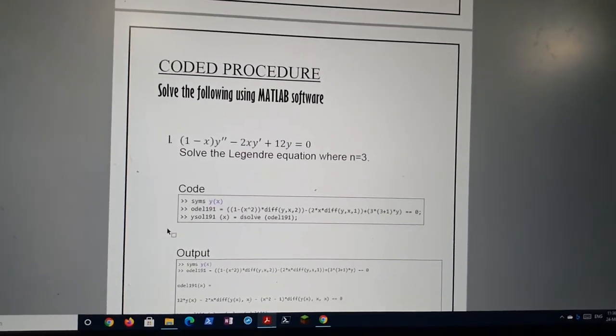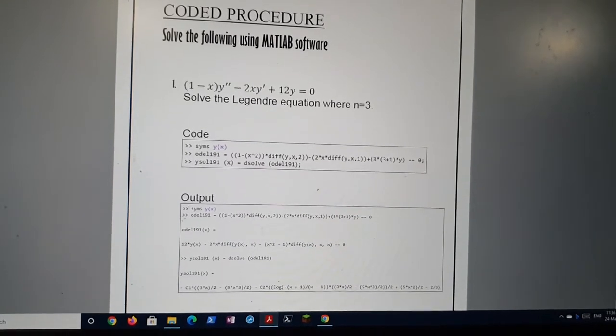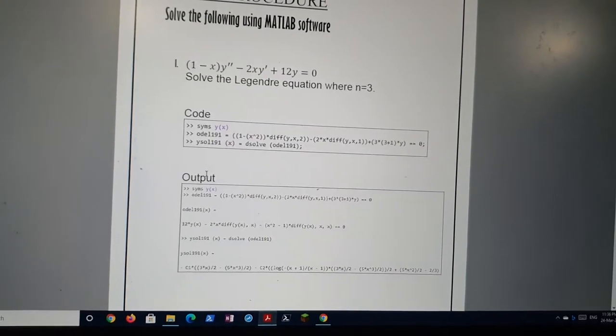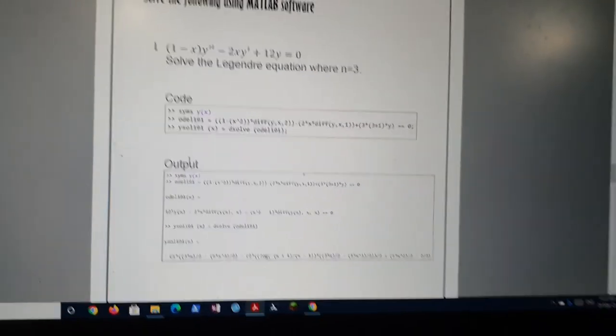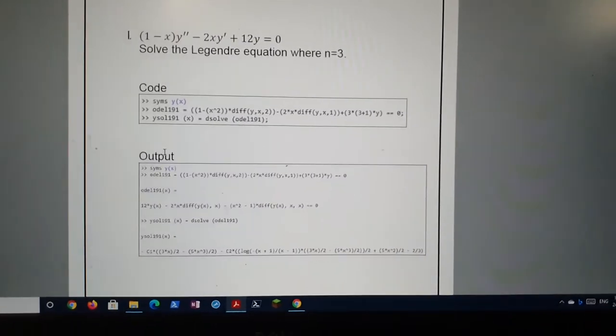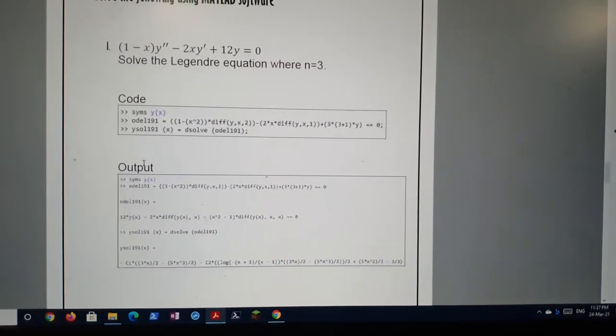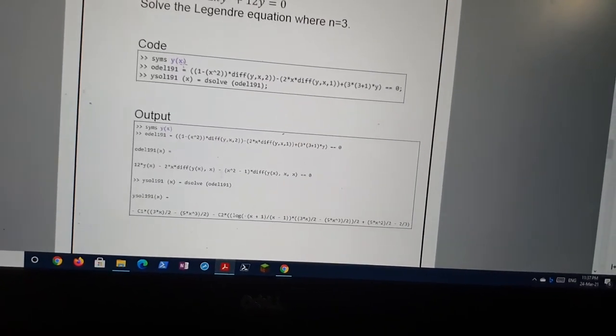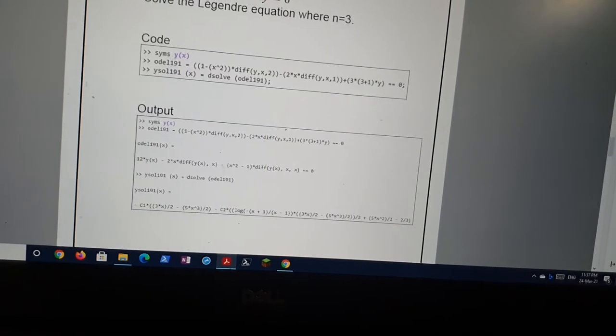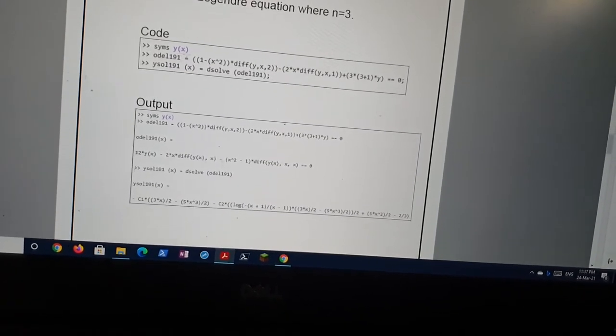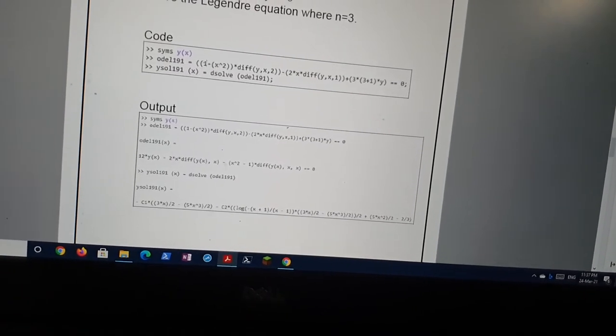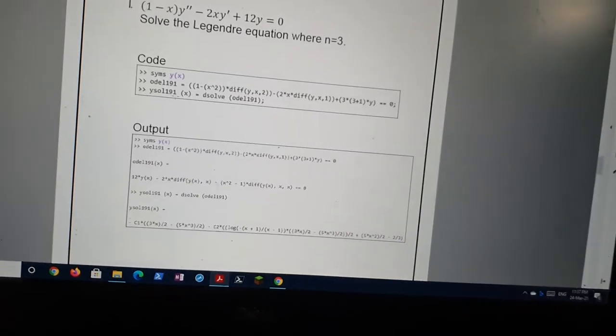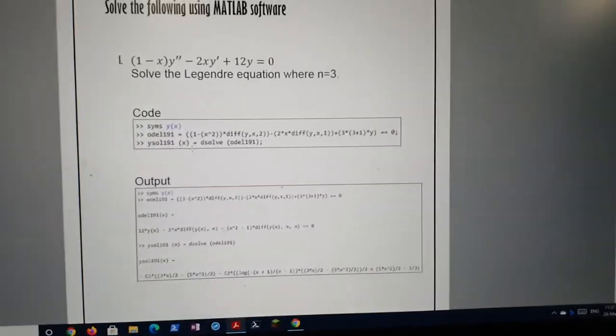These are the code procedures. The first question we have is (1-x)y'' - 2xy' + 12y = 0. You have to solve the Legendre equation where n = 0. Here we have a definite value n = 0. So we start using the syms to solve the equation. Basically we just assign a variable. Ode191 is a variable that we assign to the question. So this here is the entire question that we have. And we use ysolve. Basically it solves the differential equation.